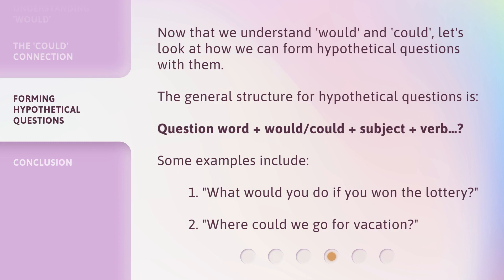Now that we understand would and could, let's look at how we can form hypothetical questions with them. The general structure for hypothetical questions is: question word plus would/could plus subject plus verb. Some examples include: one, what would you do if you won the lottery? Two, where could we go for vacation?